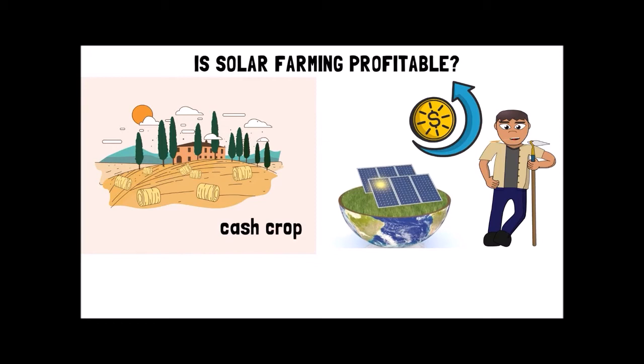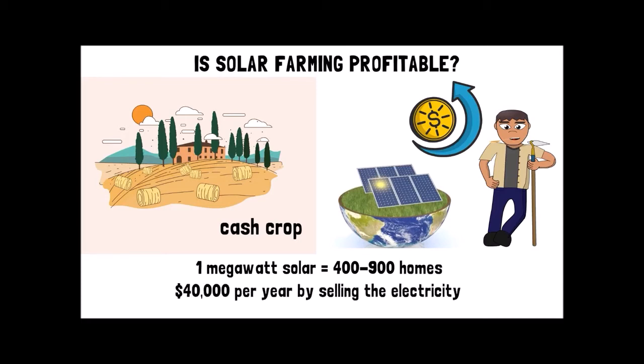A cash crop is the plant that is making the farm the most money overall. A one megawatt solar farm can power 400 to 900 homes. This size system will earn about $40,000 per year by selling the electricity.